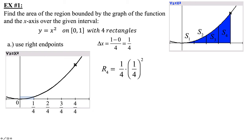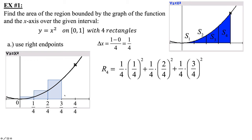The next rectangle is drawn from one-fourth to two-fourths, going to the upper right-hand corner. Same base, one-fourth, but now your height is two-fourths squared. Third rectangle from two-fourths to three-fourths: same base, plus one-fourth times three-fourths squared — that's f(3/4). Last rectangle from three-fourths to four-fourths: upper right-hand corner, one-fourth times four-over-four squared.